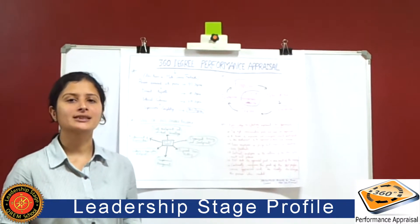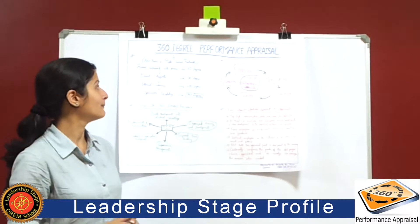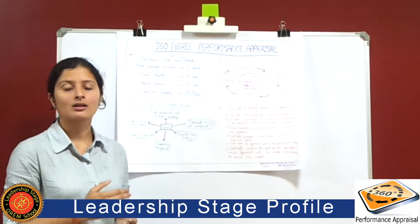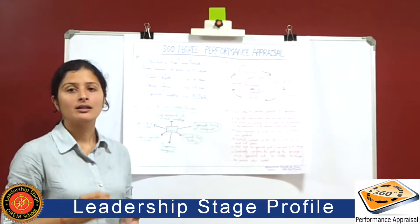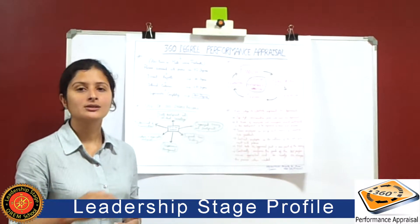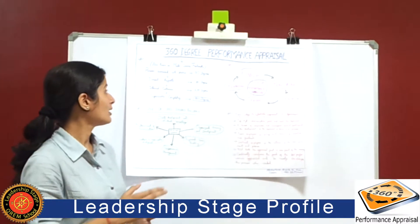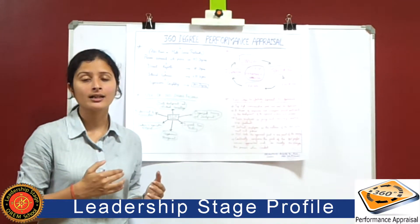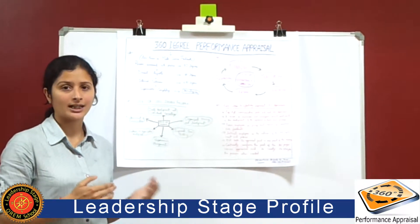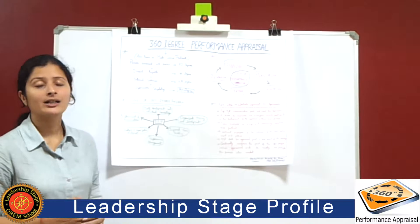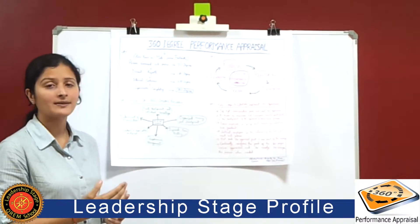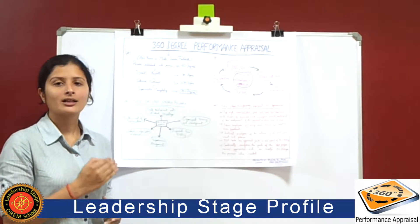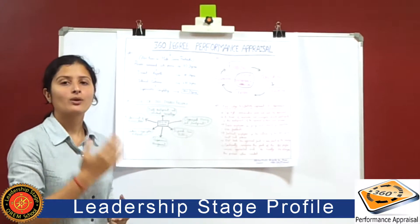360 degree performance appraisal is also known as multi-source feedback. As the name reflects, information is taken from different people, from the upper level to the lower level. It involves each and every person of the organization. When assessed with peers it forms 90 degrees; with direct reports, 180 degrees; with internal customers, 270 degrees; and finally with supervisors, completing it as 360 degrees.